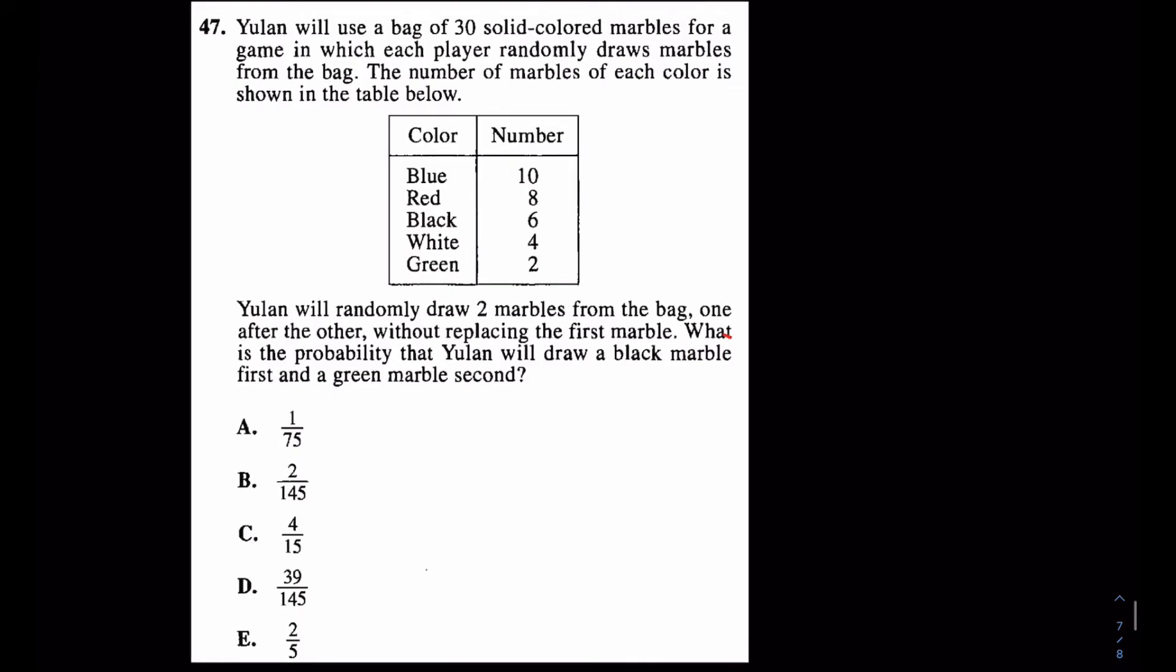This is number 47 from an ACT. This is probably the easiest one to start out with, just to warm up. But let's give it a shot. The first thing that I would say is I don't really read the full question. I actually start reading right around here, really right where the question mark is. It says, what is the probability that Yulong will draw a black marble first and then a green marble second without replacement? That's kind of important as well.